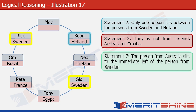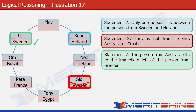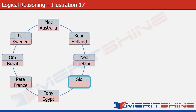Statement 7 says the person from Australia sits to the immediate left of the person from Sweden. There are two Sweden possibilities remaining. Assuming Sid is from Sweden, the person from Australia would fall in Tony's position — but Tony is from Egypt, so that is ruled out. Therefore Rick must be from Sweden, and Mac, who is immediately to Rick's left, belongs to Australia. The final box belongs to Sid, and Croatia is the only country remaining, so Sid is from Croatia. The arrangement is now complete.